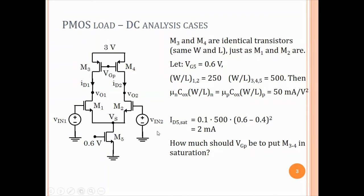We calculate ID5: the saturation current of M5 is (0.2/2)·500·(0.6−0.4)², which turns out to be 2 mA. So the tail current is 2 mA. In a DC symmetrical case, each branch carries 1 mA. Now we have to determine how much VGP should be to put M3 and M4 in saturation, since we want to use this circuit as an amplifier. Since there are effectively three current sources in this circuit, we need M3 and M4 to carry 1 mA each in the quiescent state when input voltages are equal.